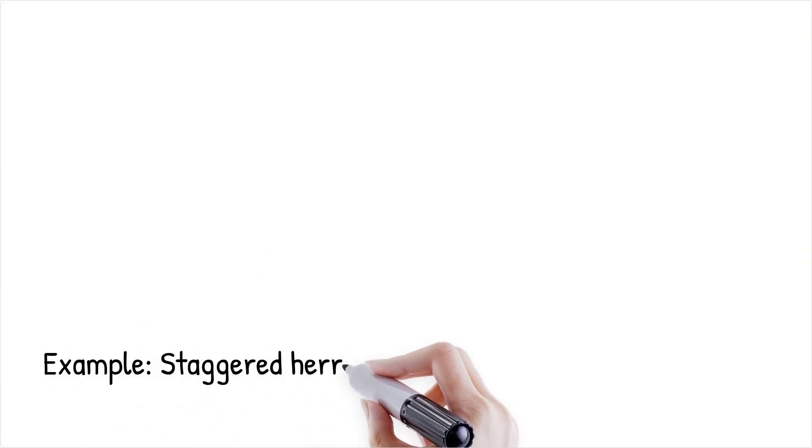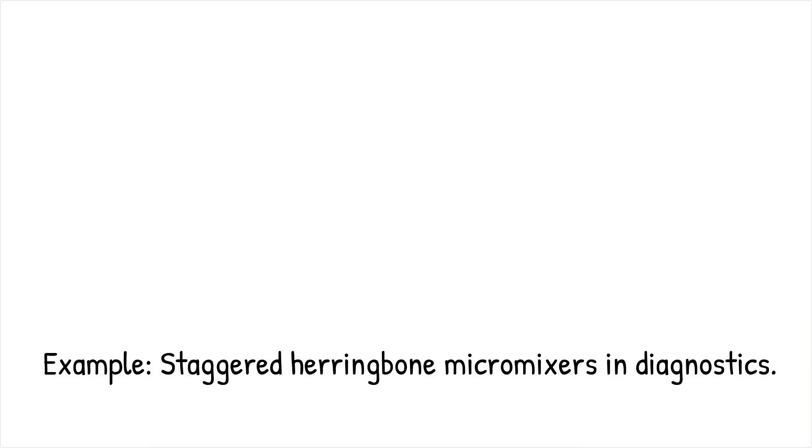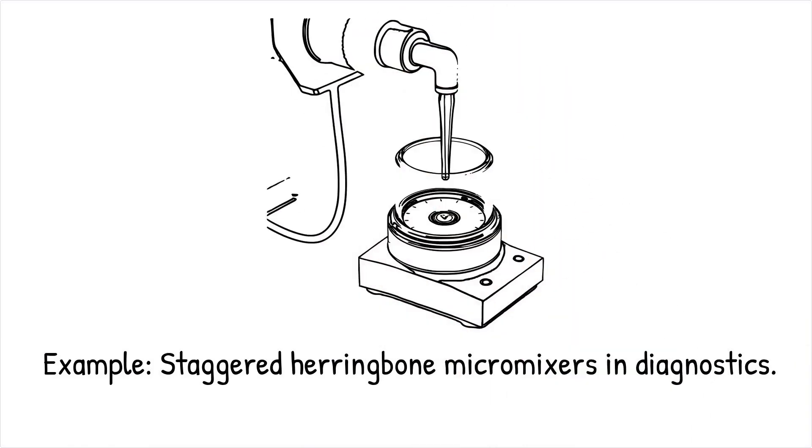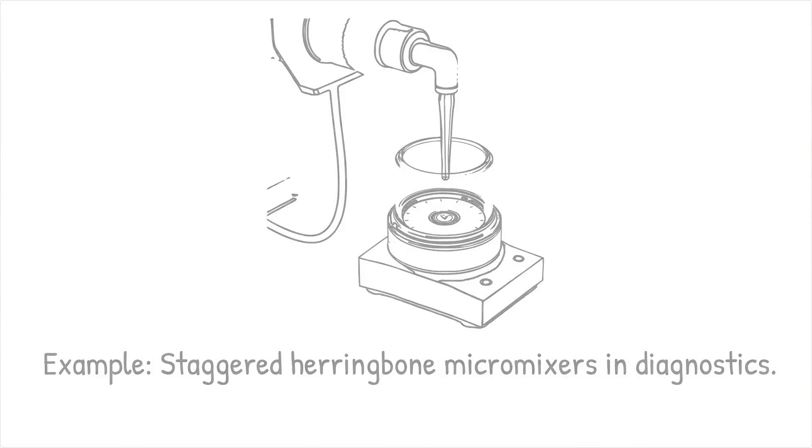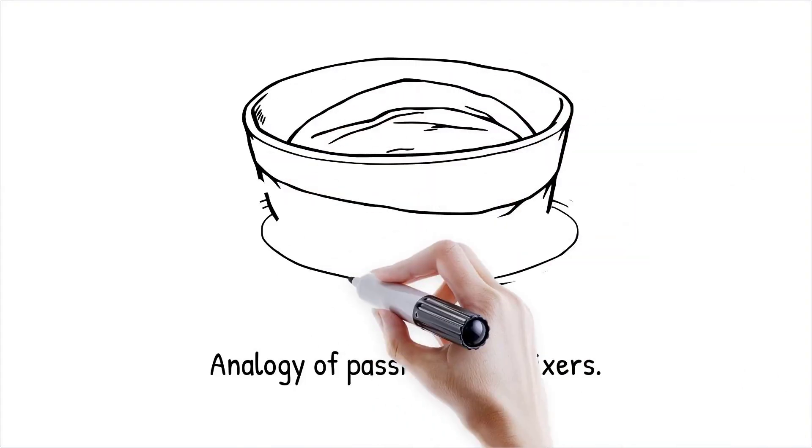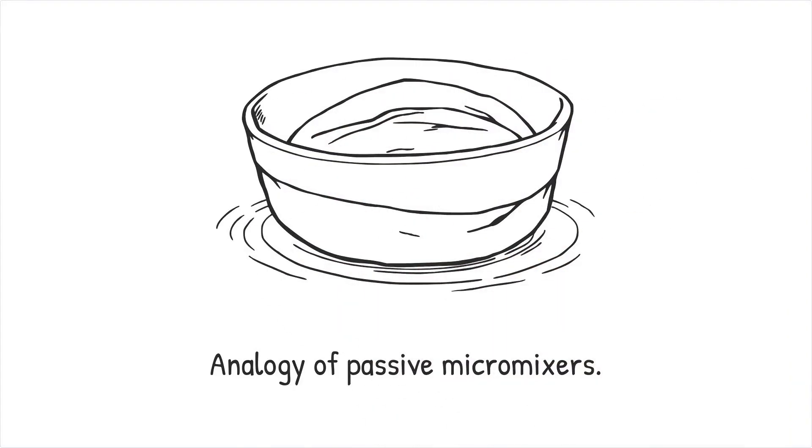Staggered herringbone micromixers improve reagent mixing in point-of-care diagnostic devices, reducing reaction times for faster test results. Passive micromixers work like kneading dough, folding and stretching layers together to distribute ingredients evenly.